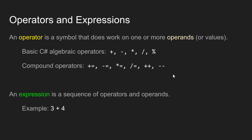So these are operators — they are going to do work on values. An expression is a sequence of operators and operands, or values. So for example, here is an expression: 3 plus 4. This expression is combining two operands, or two values, with an algebraic operator. So when I combine values with an operator, this gives me an expression.